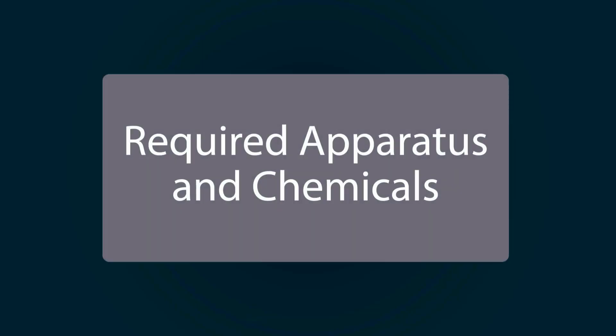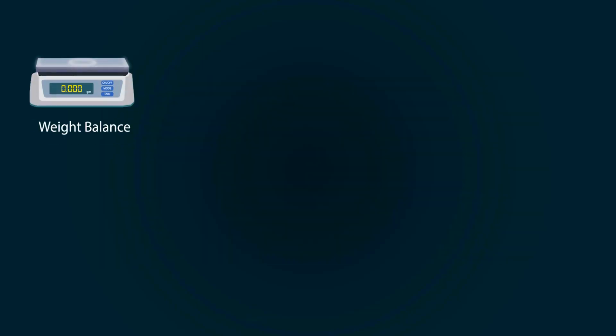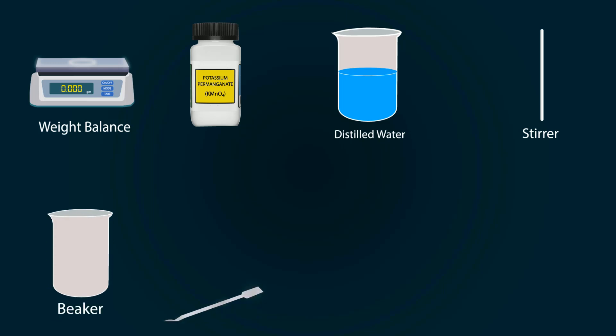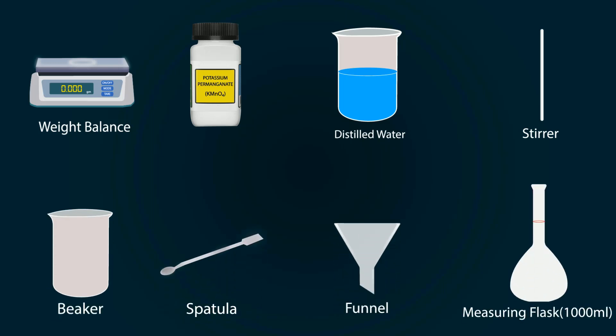Required apparatus and chemicals are: a weight balance, potassium permanganate, distilled water in a beaker, stirrer, empty beaker, spatula, funnel, and a volumetric flask of 1000 milliliters.